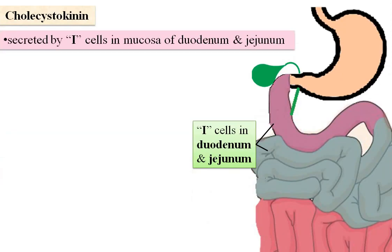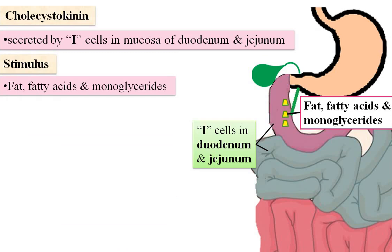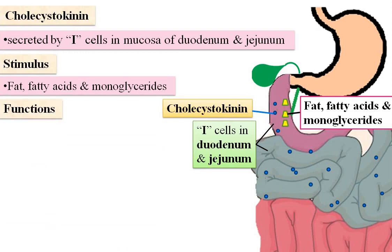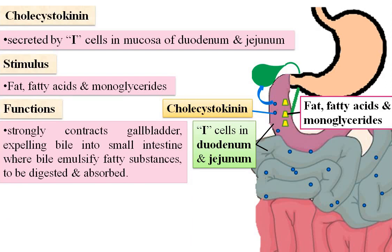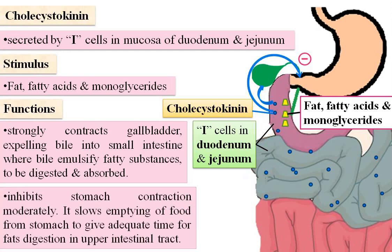Cholecystokinin is secreted by I cells in the mucosa of the duodenum and jejunum. The entry of fatty acids and monoglycerides into the small intestine stimulates I cells to secrete cholecystokinin. It has an excitatory effect on the gallbladder and an inhibitory effect on the stomach. It strongly contracts the gallbladder, releasing bile into the small intestine. Bile emulsifies fatty substances, which are then digested and absorbed. Cholecystokinin also inhibits stomach contraction moderately and slows emptying of food from the stomach to allow adequate time for fat digestion in the upper intestinal tract.